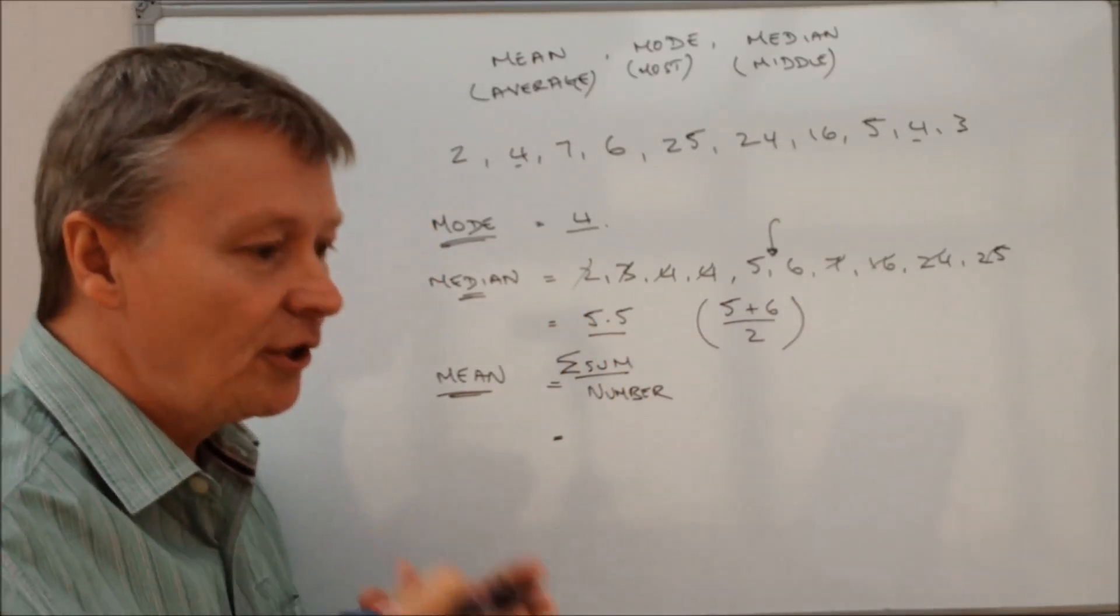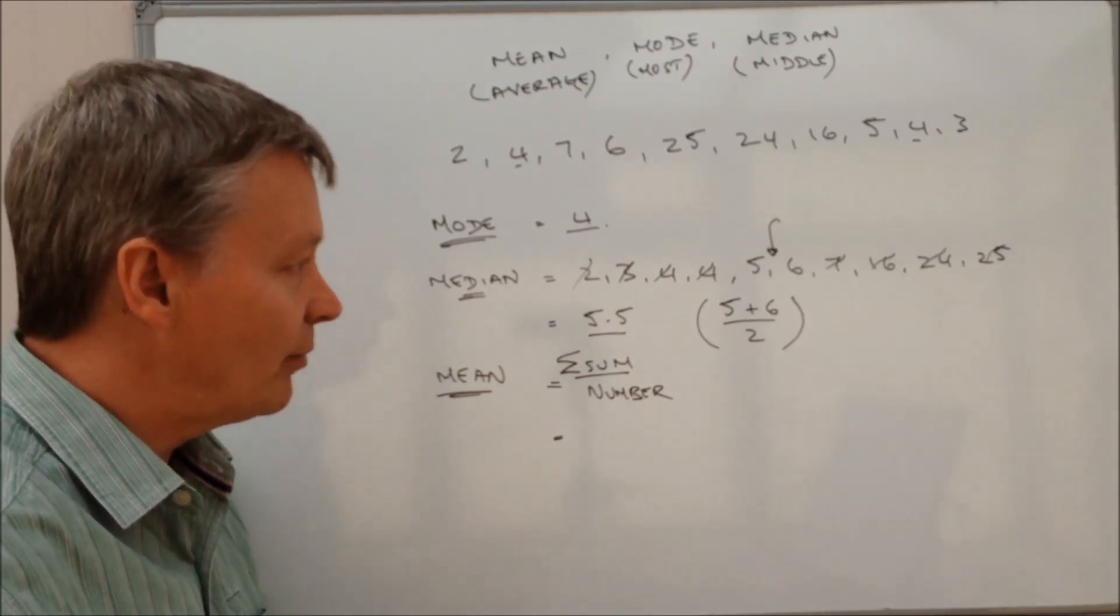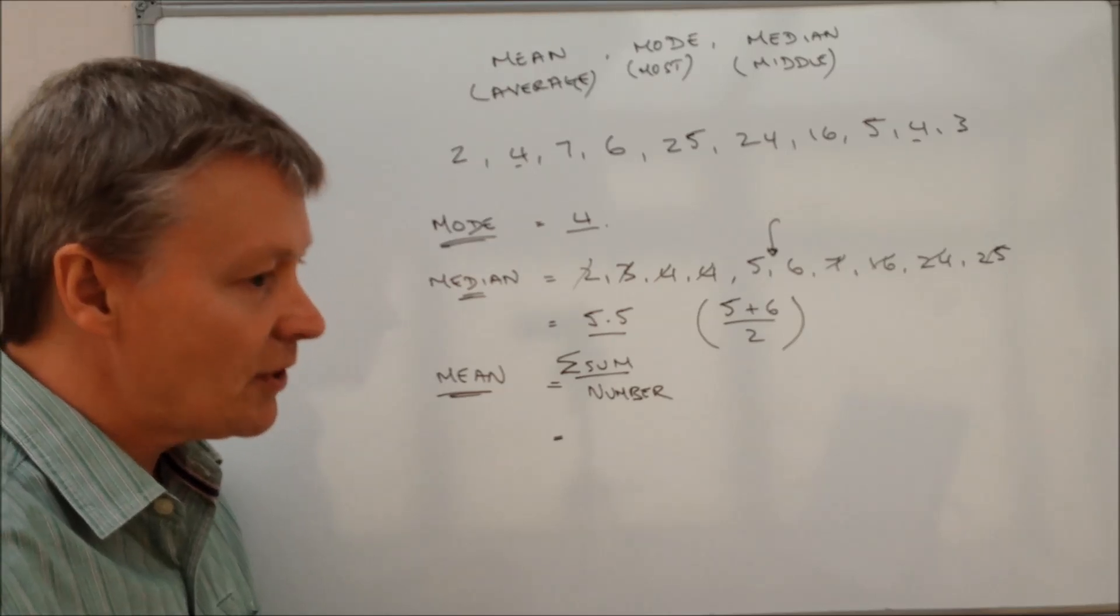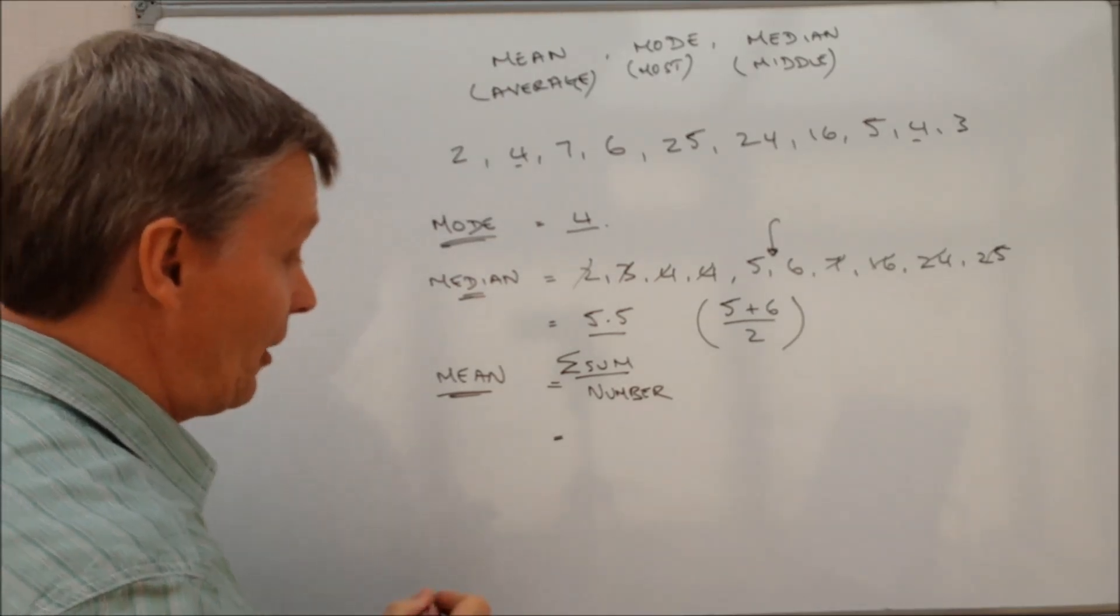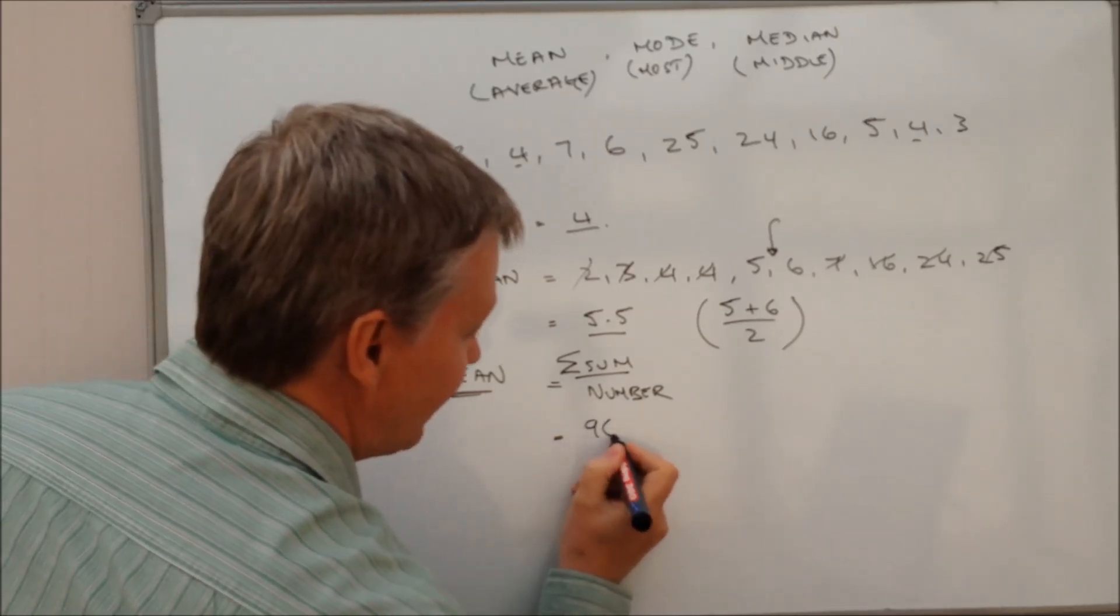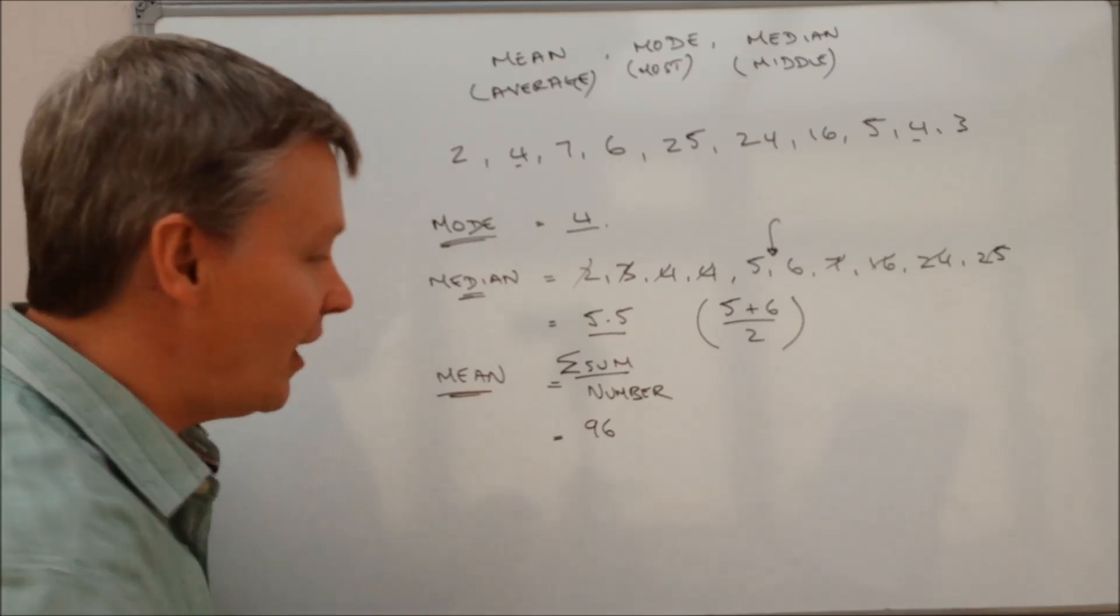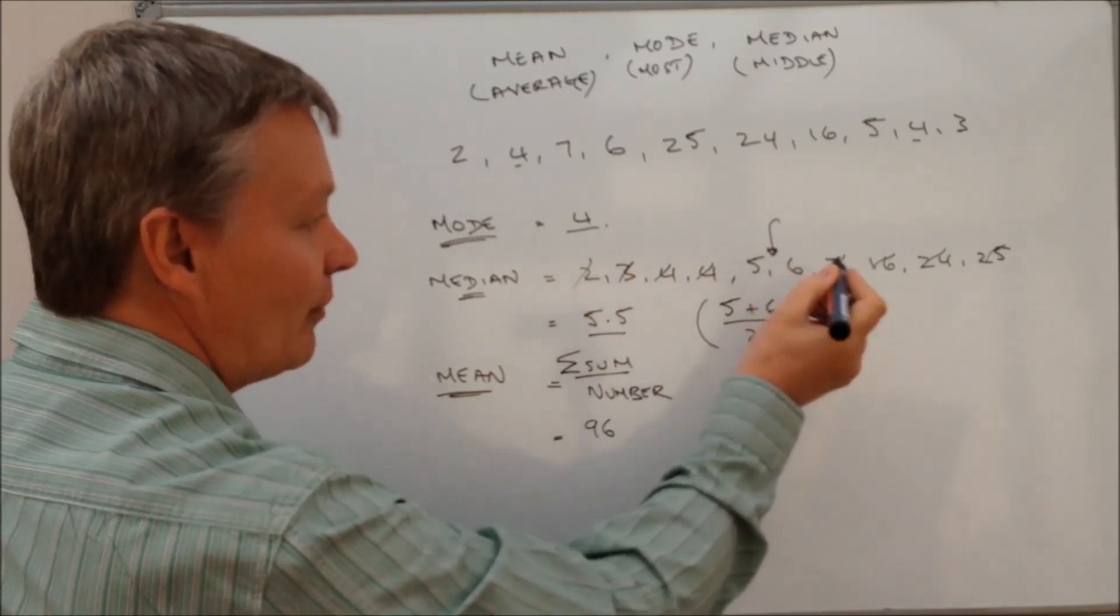So if I add up all of those and do please, again, be really, really careful when you do that, you should end up with a sum total. And it's not actually on my notes, but if you divide by, yes it is. It's ninety six. If you add up all of those together, you should get ninety six.